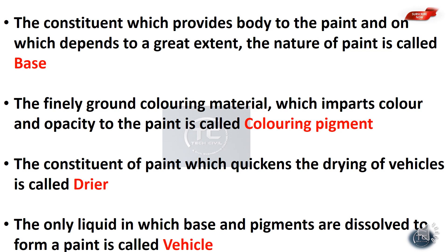The finely ground material which imparts color and opacity to the paint is called the coloring pigment. Pigment is a very important ingredient of paint. It is the finely ground coloring material which imparts color and opacity to the paint.